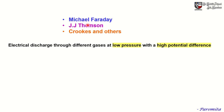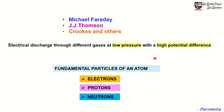Dalton regarded atoms as structure-less, hard, spherical particles that are indivisible. However, researchers like Michael Faraday, J.J. Thompson, William Crookes, and others conducted experiments on electrical discharge through different gases at low pressure with a high potential difference, and they gifted us with fundamental information about the fundamental particles in an atom. Presently we will study about three fundamental particles: electrons, protons, and neutrons.